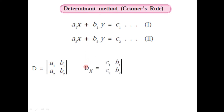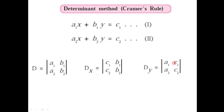The second determinant is Dx. In Dx, the first column a1 and a2 is replaced by the constant terms c1 and c2, while the second column b1 and b2 remains as it is. Similarly, for Dy, the second column b1 and b2 of determinant D is replaced by the constant terms c1 and c2, while the first column a1 and a2 remains as it is.